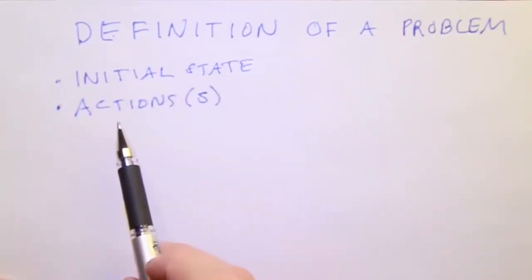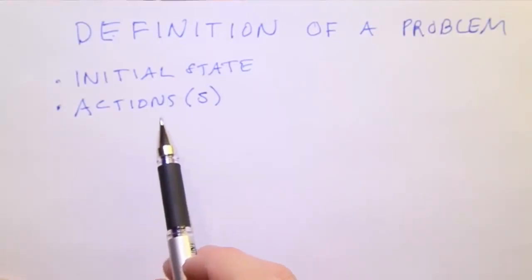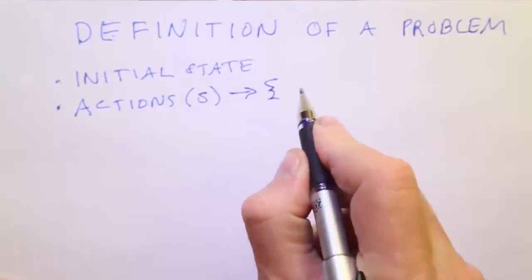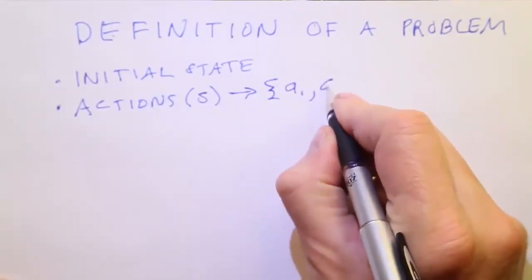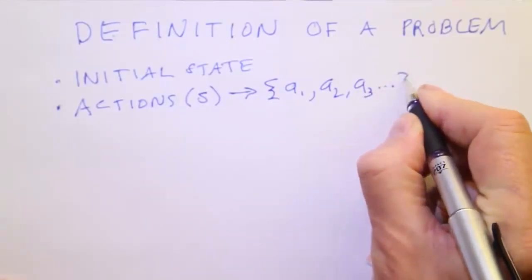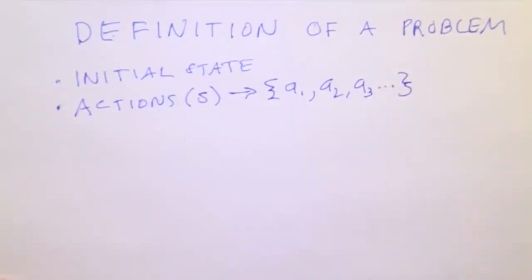Next, a function actions that takes a state as input and returns a set of possible actions that the agent can execute when the agent is in this state. In some problems, the agent will have the same actions available in all states, and in other problems they'll have different actions dependent on the state. In the route finding problem, the actions are dependent on the state. When we're in one city, we can take the routes to the neighboring cities, but we can't go to any other cities.